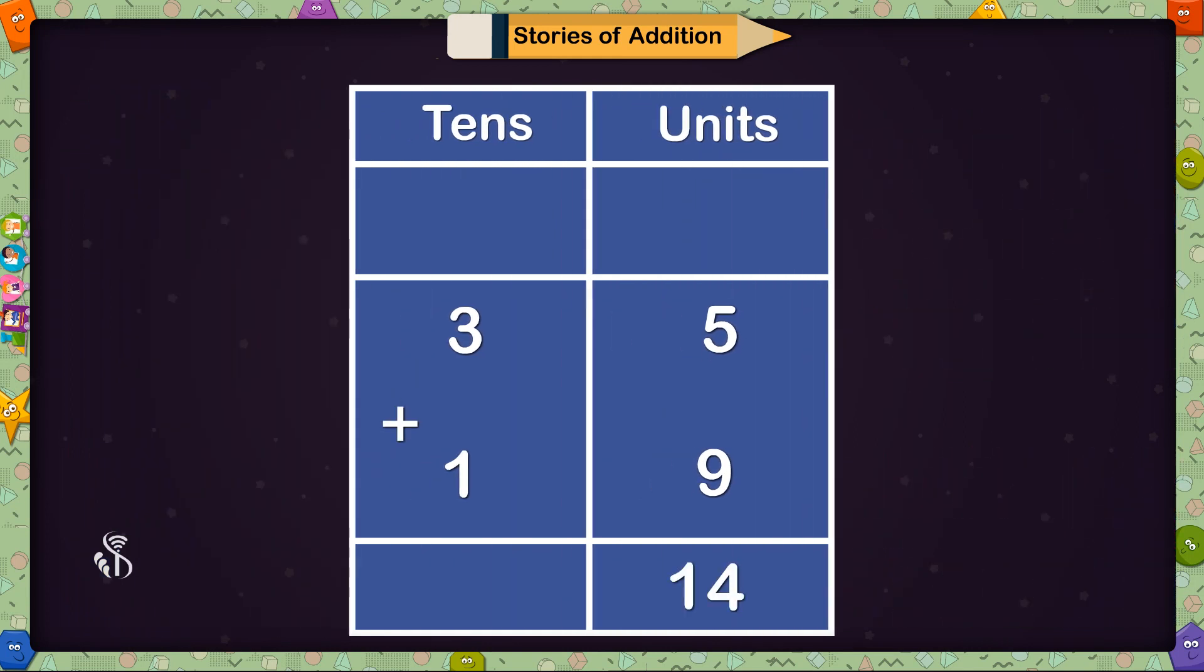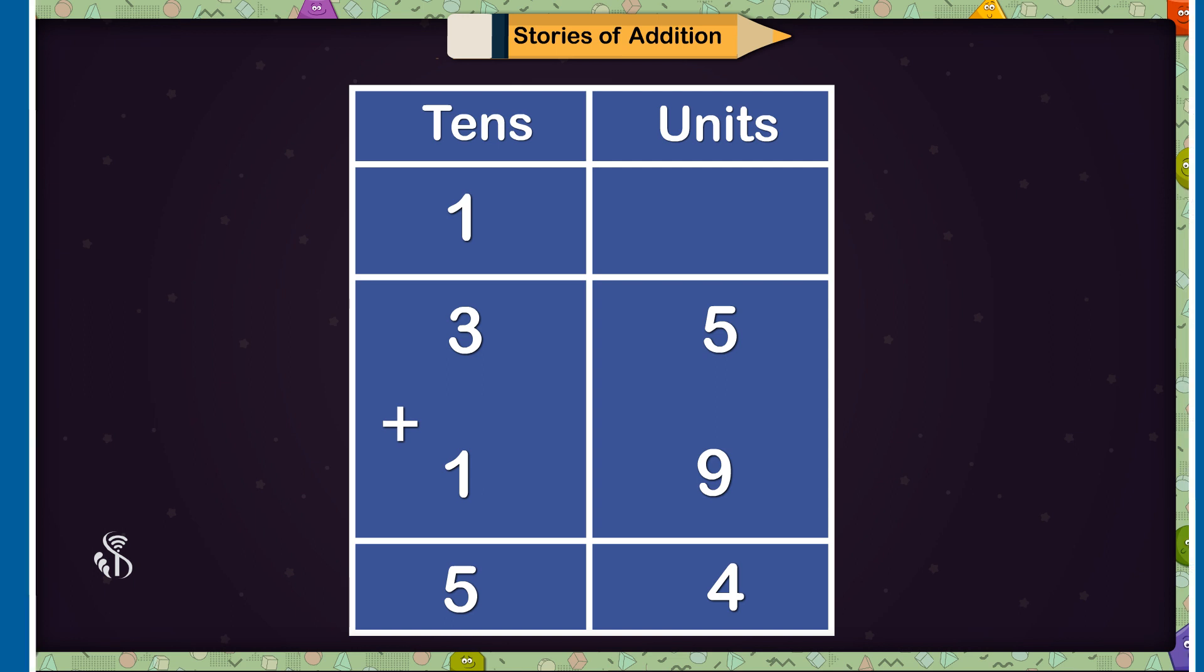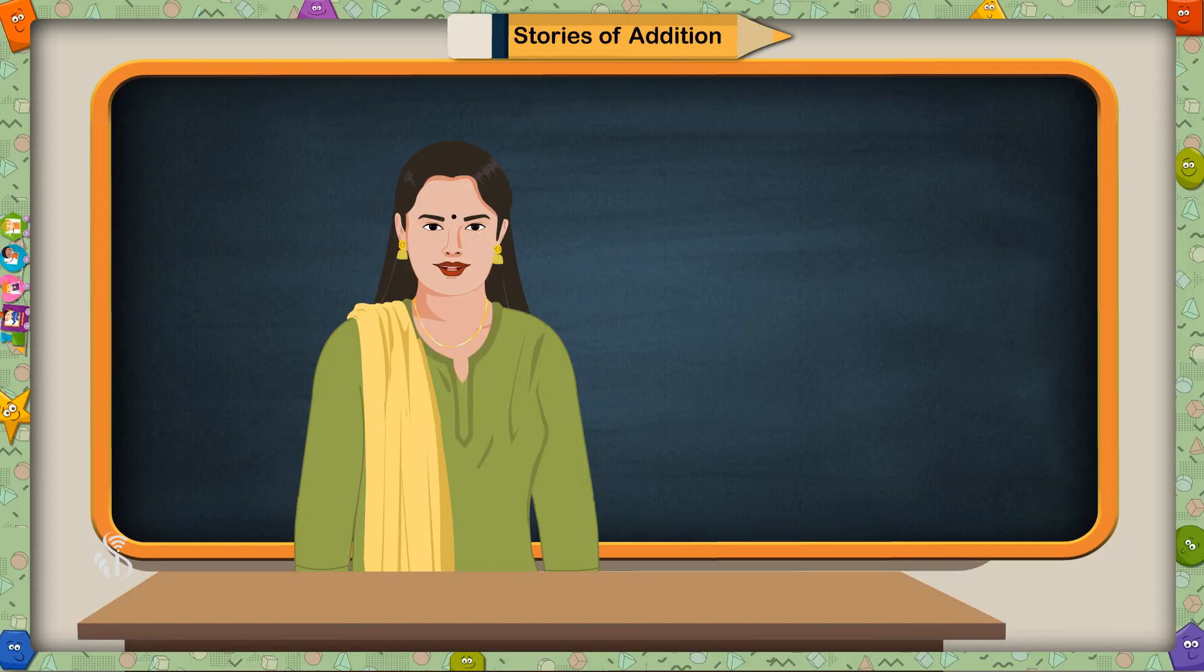5 and 9 units together make 14 units. I will write this 4 in the answer in units place and carry over 1 ten to tens place. There are 3 plus 1 is equal to 4 tens in tens place already. In which this carried over 1 ten will be added. So the answer will be 5 tens. So the shopkeeper has 54 kites in all. You have solved this problem very well children.